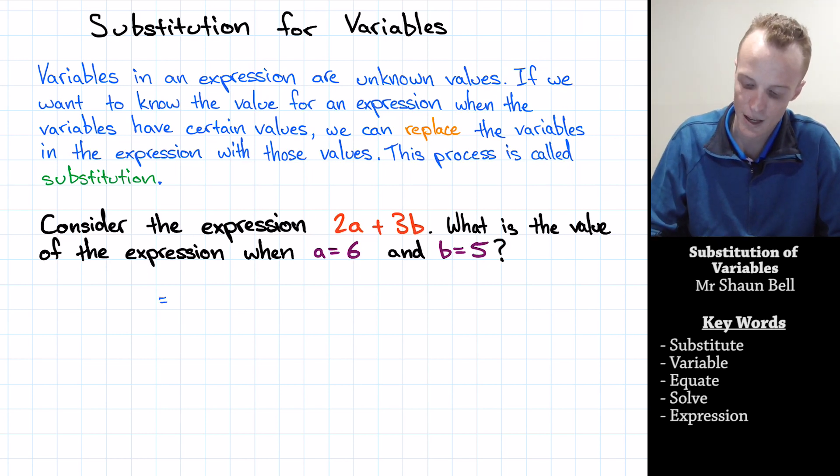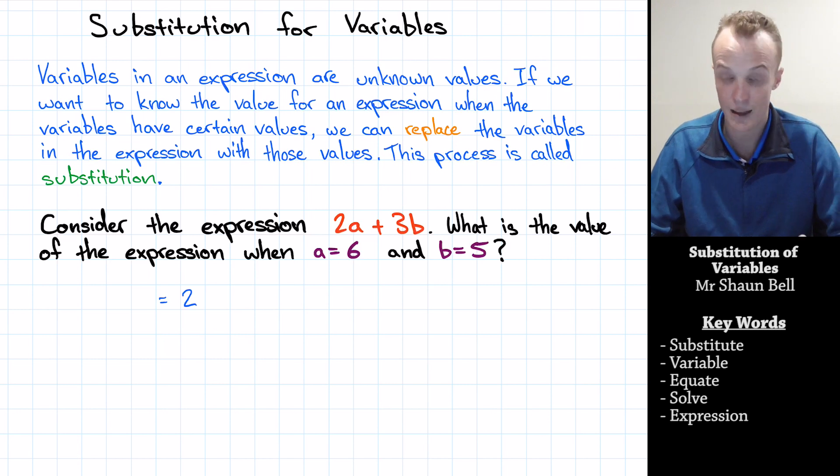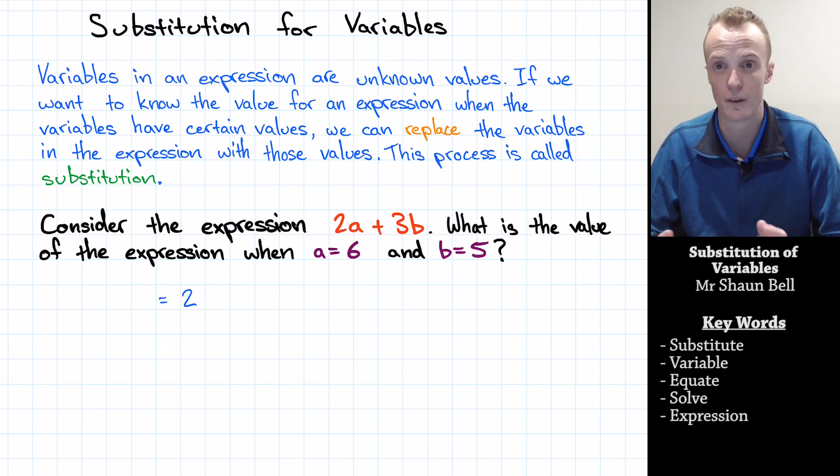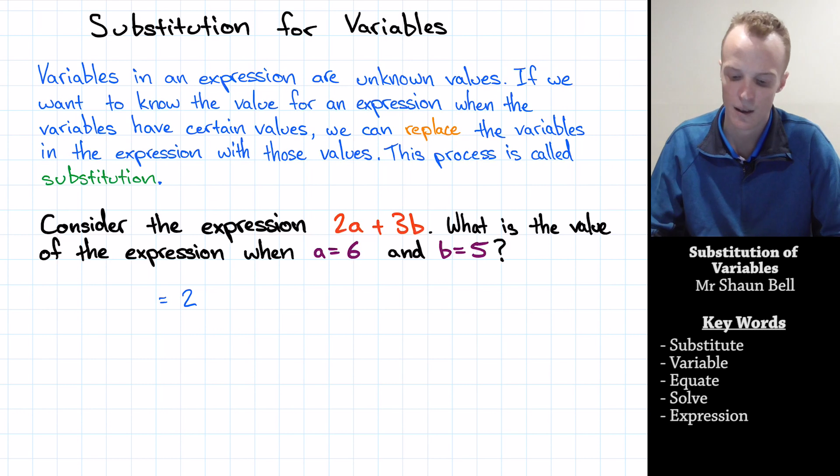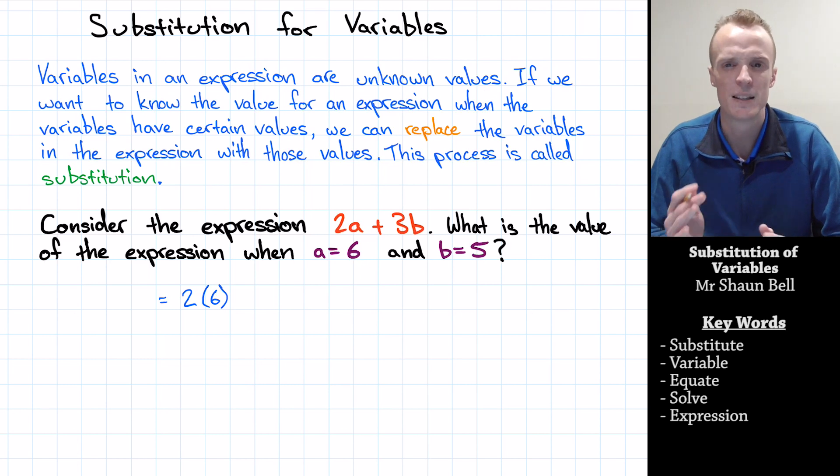Now, my expression is 2a and I want to replace that a with 6. But if I simply write 6 down right now, it's going to look like 26. But 2a means 2 times a. 2 times 6 is 12. That's very different from 26. So I recommend that you substitute our 6 with brackets around it. So that way you remember to go 2 times 6.